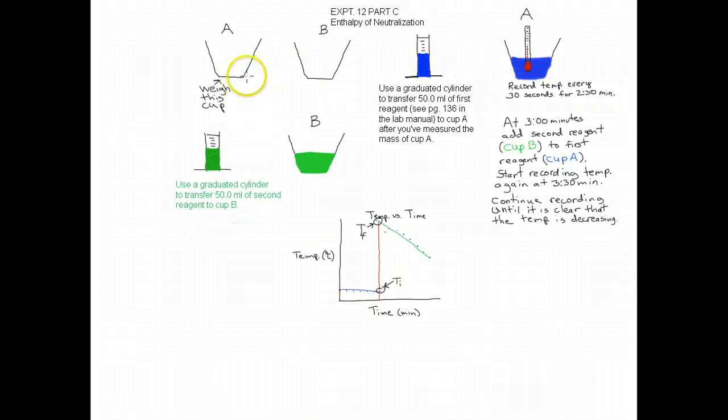First thing you do, you're going to have two styrofoam cups, cup A and cup B. Weigh the first cup, remember three places past the decimal, and you're going to transfer 50 milliliters using your graduated cylinder of the first reagent from page 136. For example, in run one, that would be two molar hydrochloric acid into cup A, the one you weighed.